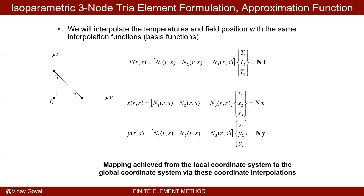It's a very similar idea — we interpolate the temperatures over the domain using the shape functions corresponding to this simple triangle. The temperature, which is the variable of interest, is going to be approximated over this R and S coordinate system over this triangular element. The shape functions are defined for this triangular element; N-bold has these shape functions. T1, T2, T3 are the nodal temperatures, and I want to find those for the whole system.